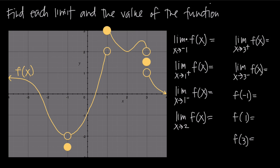The first one: we're asked to find the limit as x approaches negative 1 of the function f. So we need to find the limit of the function as x gets really, really close to negative 1. We find the point at which x equals negative 1 — that's this point right here along the x-axis. Everything along this vertical line is x equals negative 1.